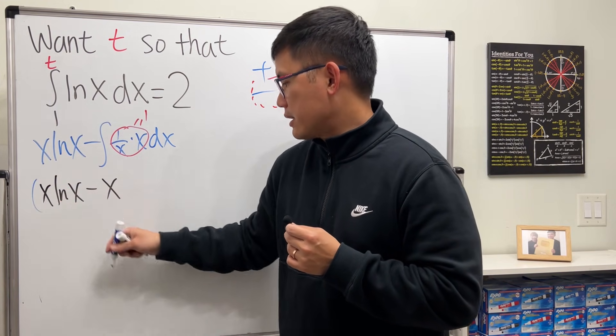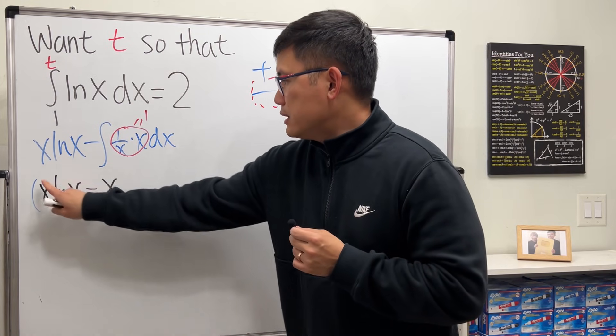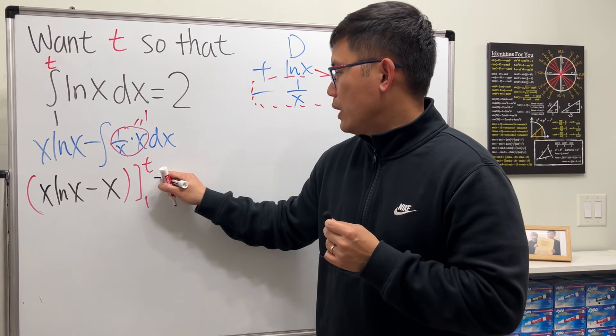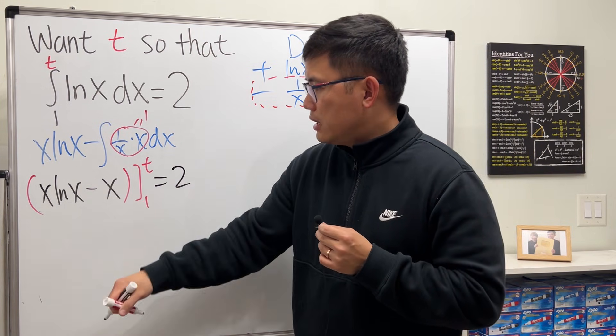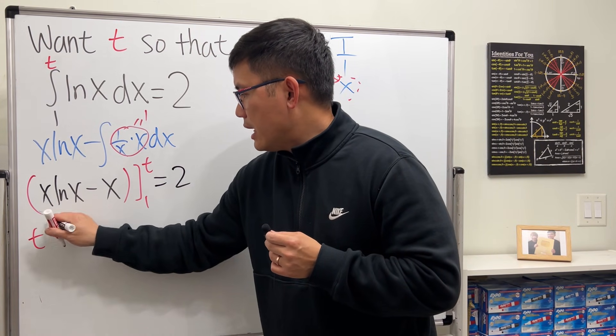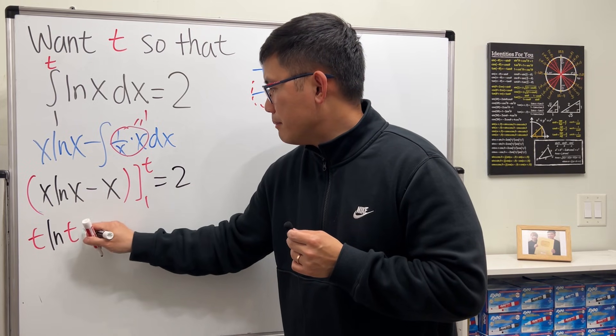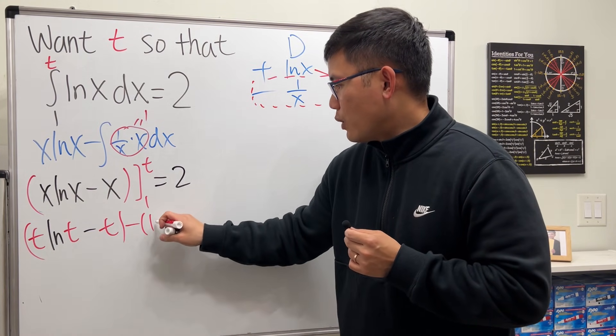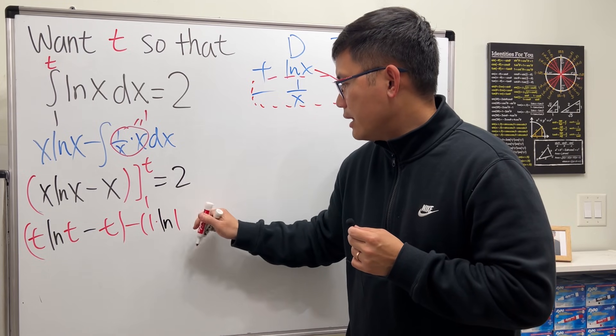Then we are going to plug in the numbers 1 and t, and then we have to make it equal to 2. Plugging t first, we get t ln(t) and then minus t, and then subtract plugging 1, so we have 1 times ln(1) and then minus 1.